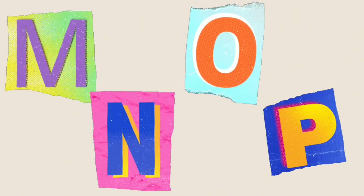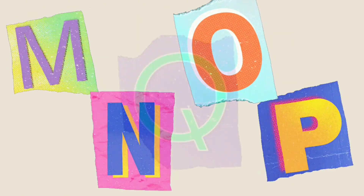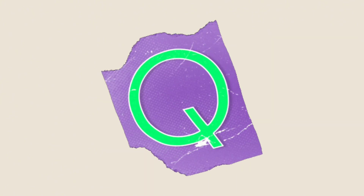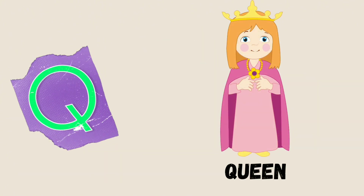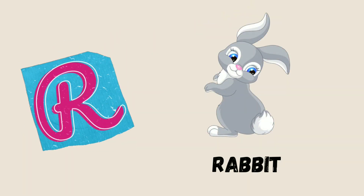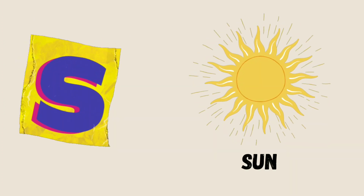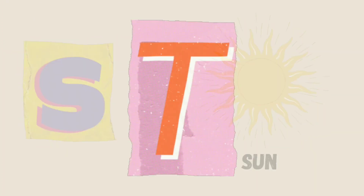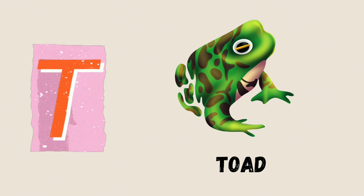Q is for Queen, Q-Q-Queen. R is for Rabbit, R-R-Rabbit. S is for Sun, S-S-Sun. T is for Toad, T-T-Toad.